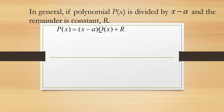We know that the remainder is going to be a constant because the remainder must have a lower degree than x minus a. Since x minus a is first degree, in order to have a lower degree, r, the remainder, has to be of degree 0. So the remainder should be a constant.